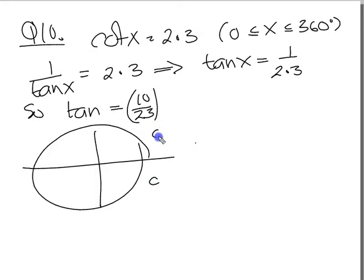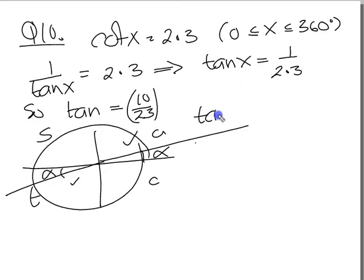Draw a circle, write C-A-S-T. Tan is positive here and here, so draw our two lines. Mark off alpha to the horizontal and write tan alpha then.